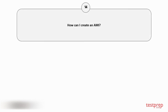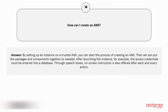Question number 14: How can I create an AMI? By setting up an instance on a trusted AMI, you can start the process of creating an AMI, then we can put the packages and components together as needed. After launching the instance, the access credentials must be entered into a database. Through speech boxes, on-screen instruction is also offered after each and every action.